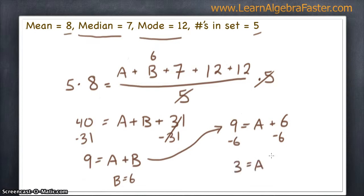And we know that our final set of numbers is three, six, seven, twelve, twelve. That group of numbers has a mean of eight, a median of seven, a mode of twelve, and there's only five total numbers.